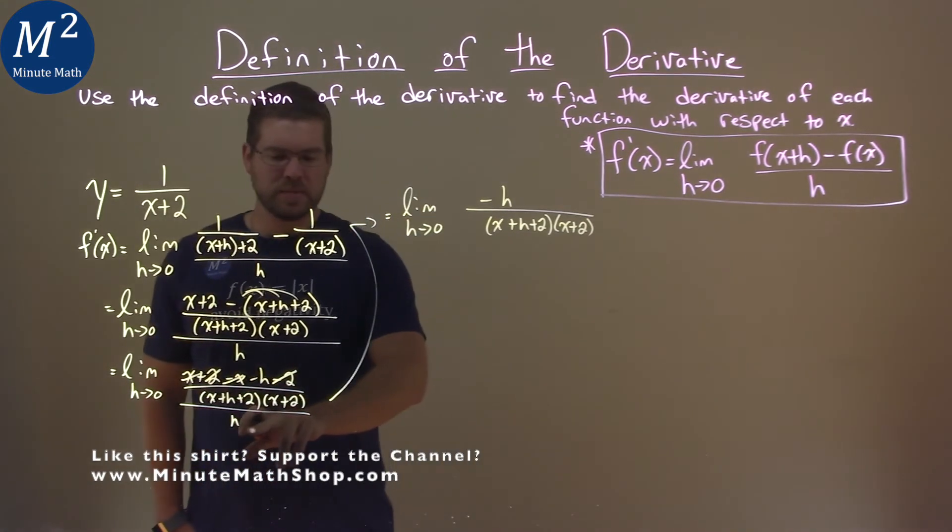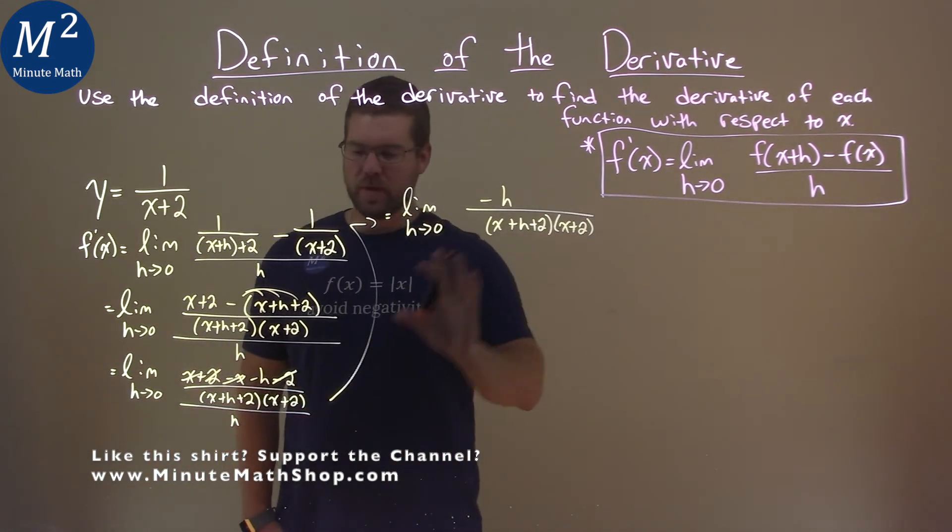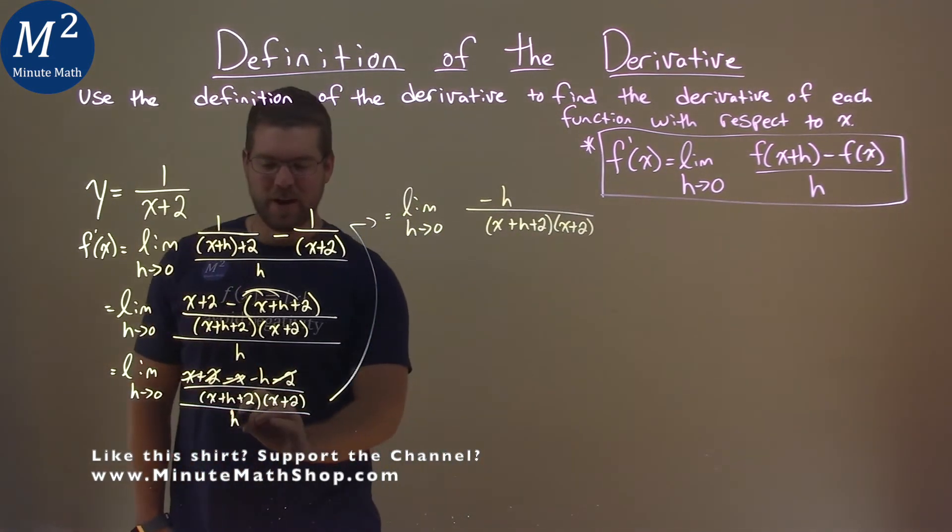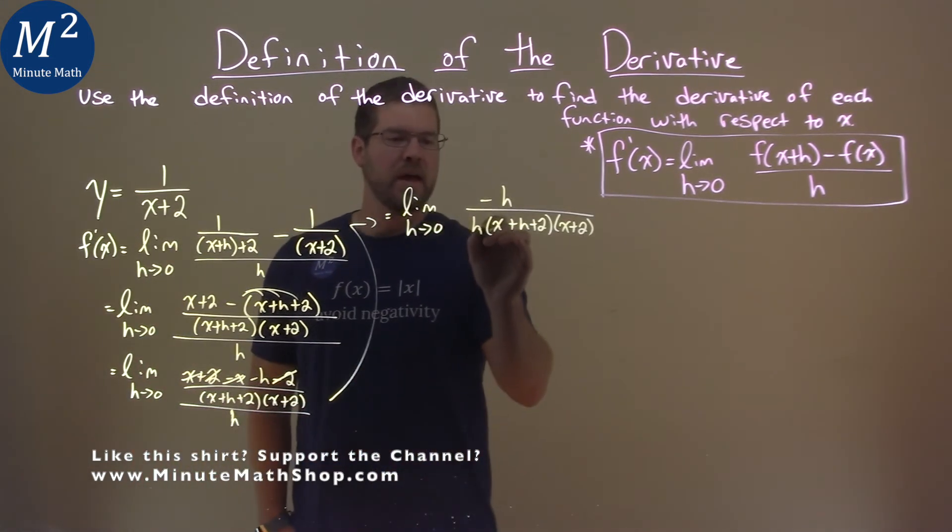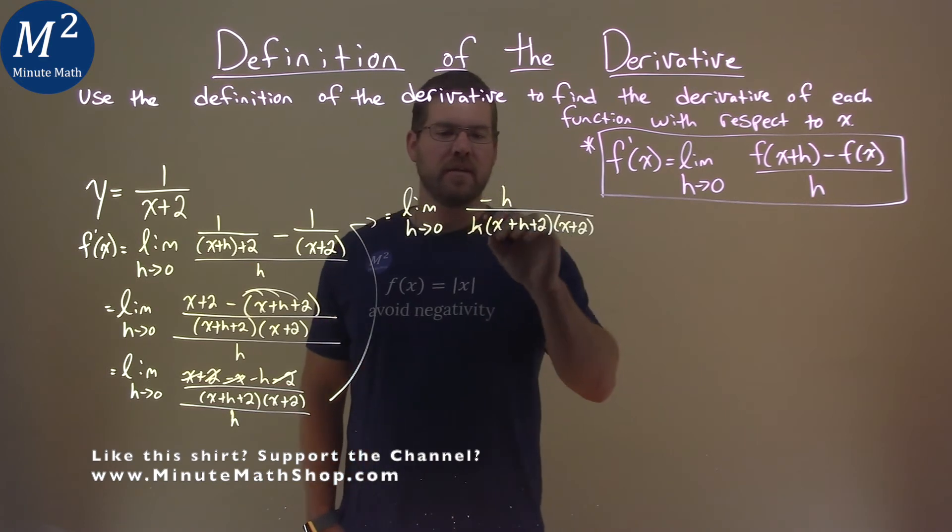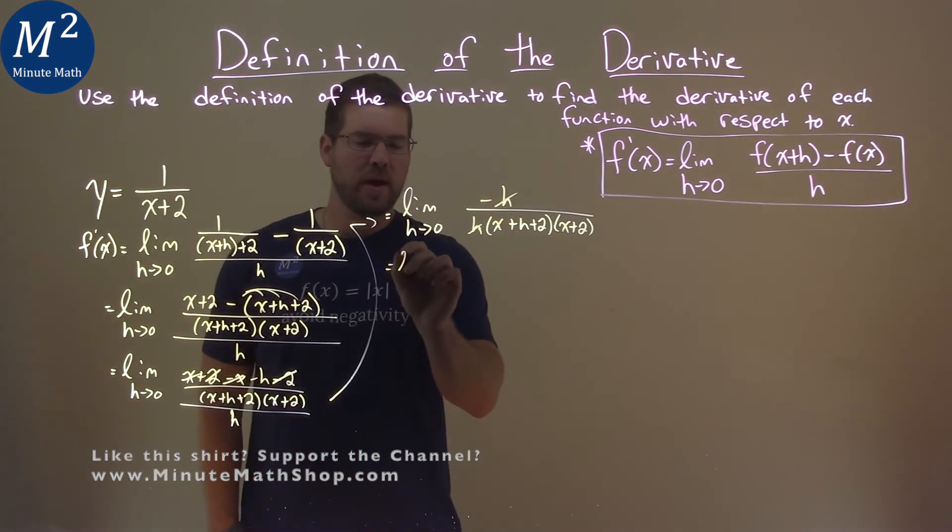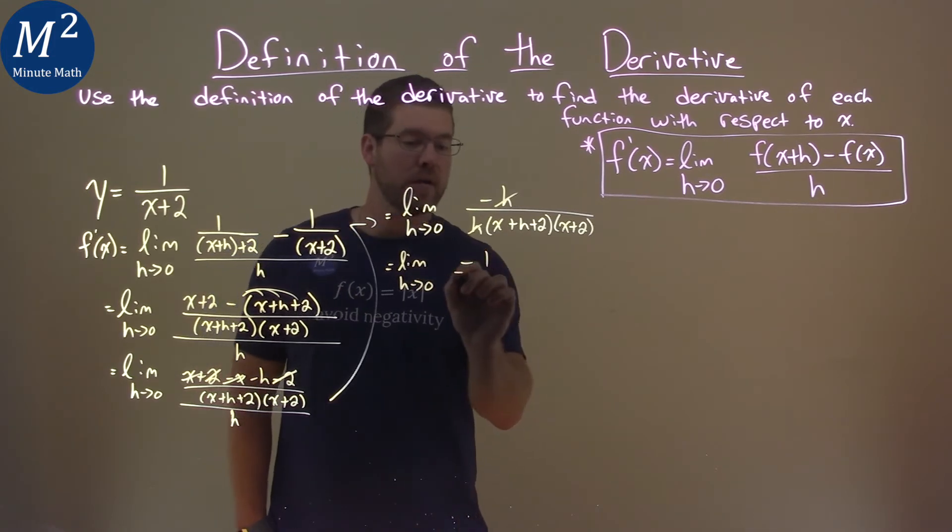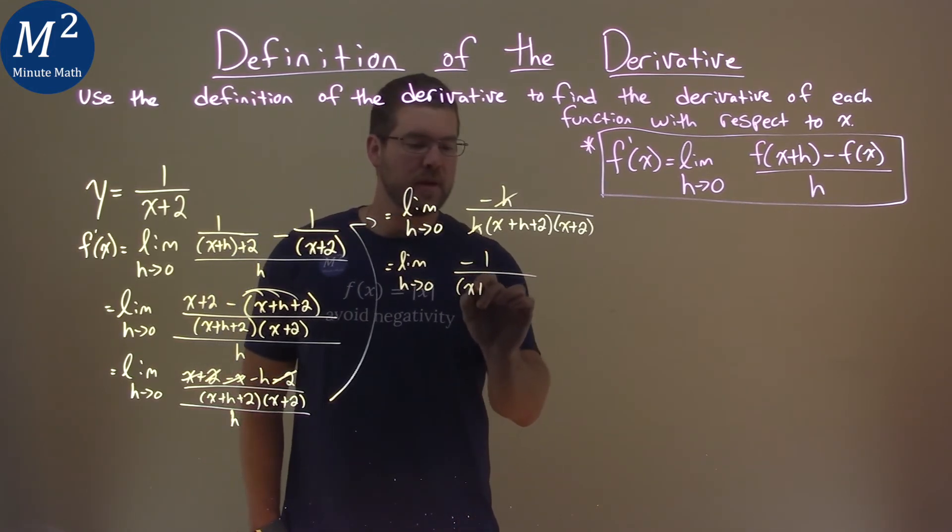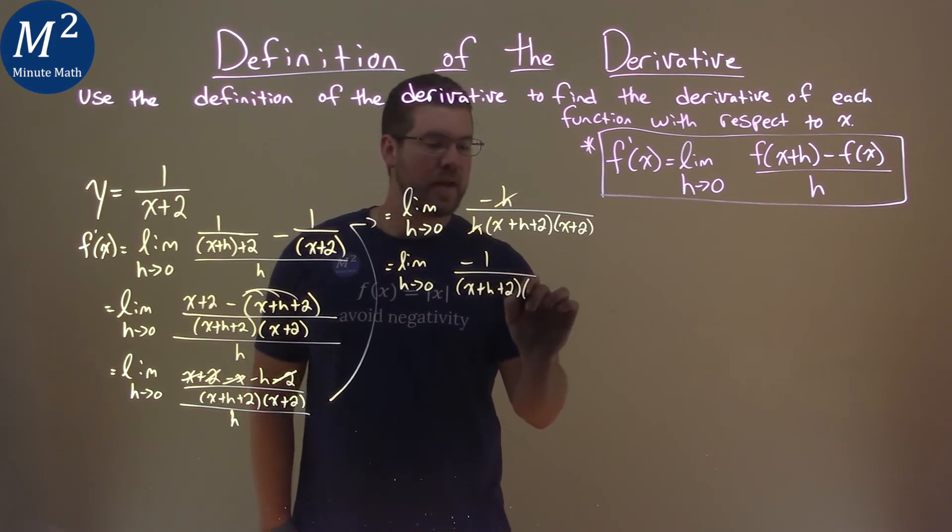Now we're all divided by h. When we divide by h, we can actually just put it right here. It means the same thing. And that helps us visually see that these h's cancel. So again, we have the limit as h approaches 0 of negative 1 over x plus h plus 2 times x plus 2.